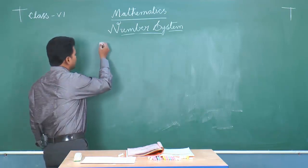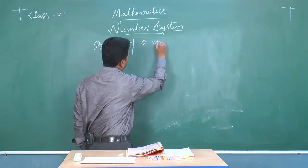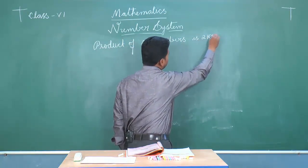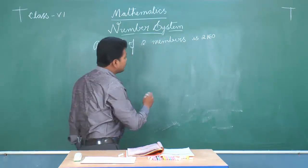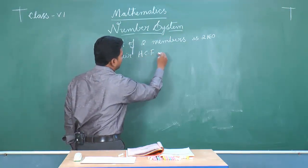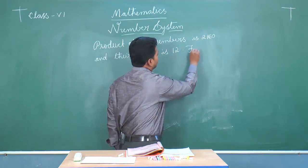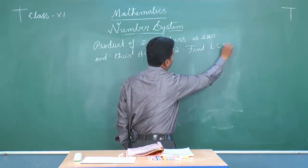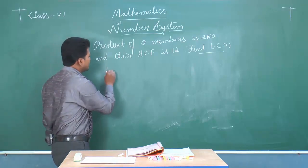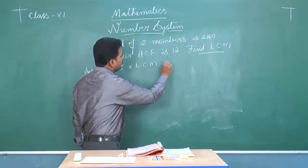The product of the two numbers is given as 2160, and the HCF is given as 12. The question asks us to find their LCM. We have the relation between the numbers and their LCM and HCF: HCF into LCM is equal to the product of the two numbers.